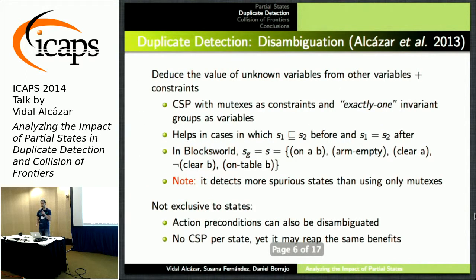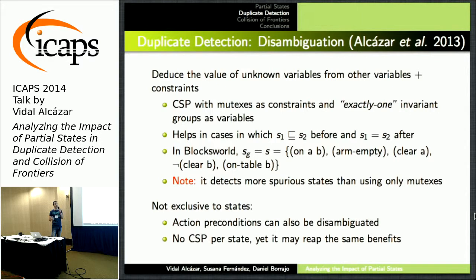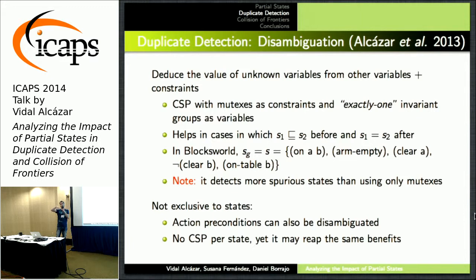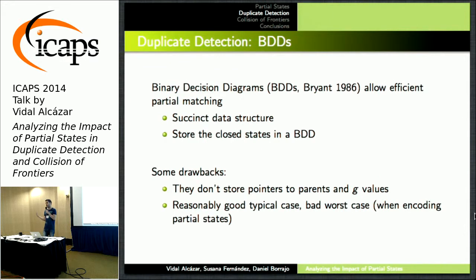Going over the first alternative: disambiguation means filling partial states with more information, in the sense that this happens because we are not inferring information that we could infer. This is usually done by exploiting state invariants like mutex and exactly-one invariant groups. In the previous example, we depart from on A, B, but there are no more blocks, so we can infer that the arm is empty and that B is on top of the table. If we disambiguate the goal state, after doing this stack-unstack thing in regression, we get the same state, and it is properly detected as a duplicate by the hash function. This is also done per state, but you can also disambiguate the action preconditions, so going in regression you will get fuller partial states.